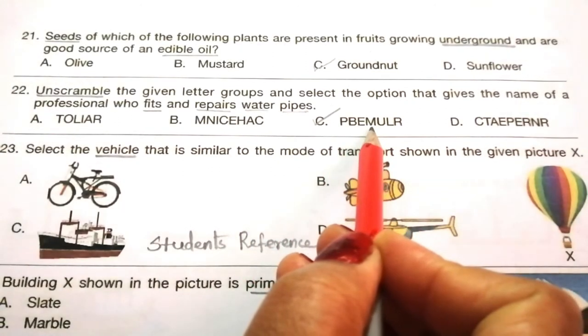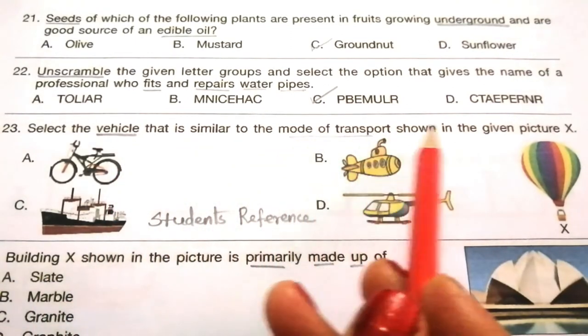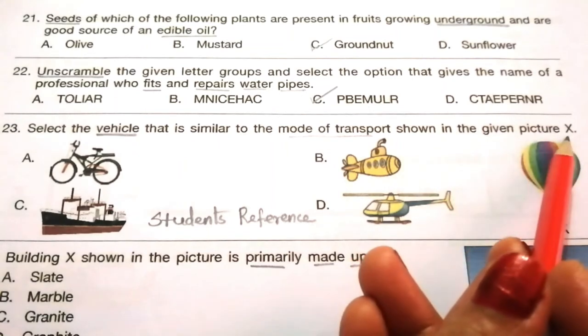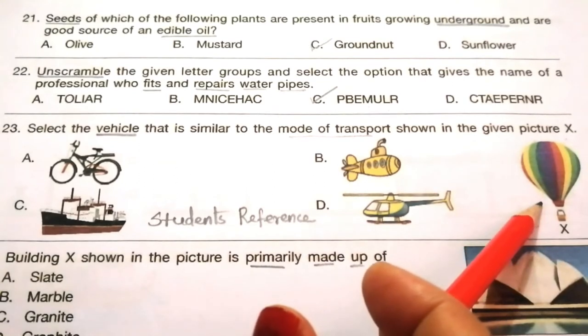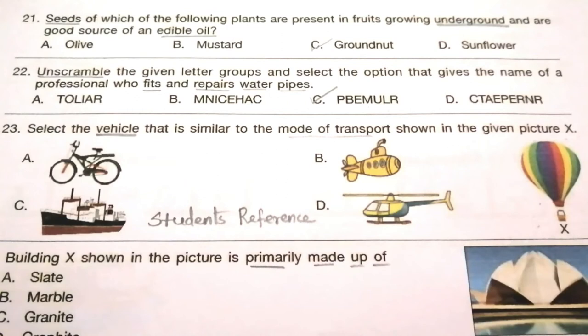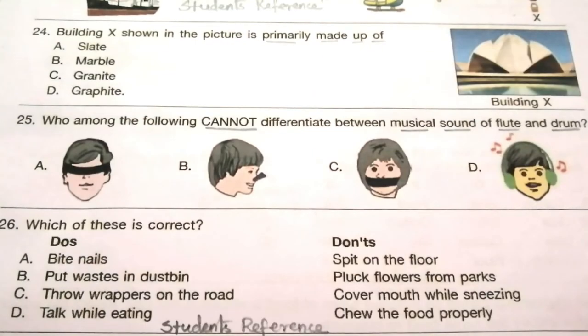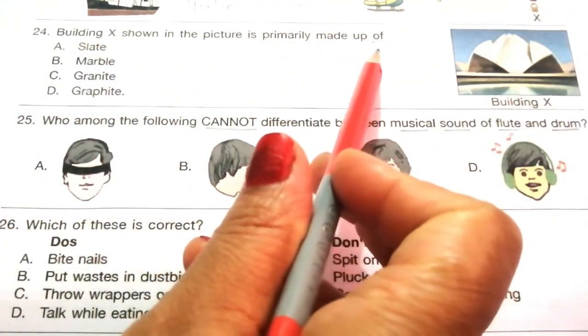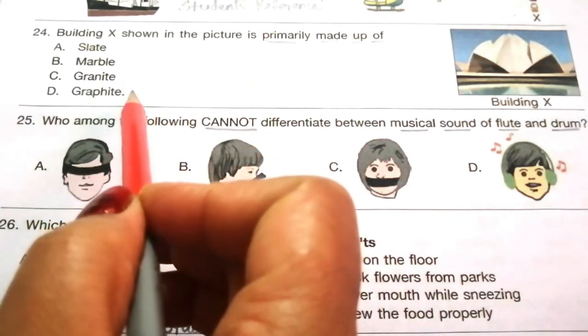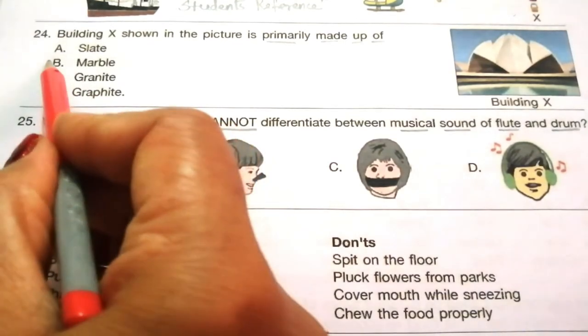Question 23: Select the vehicle similar to the mode of transport in picture X. This is a hot air balloon, an example of air transport. The answer is D, helicopter. Question 24: Building X shown in the picture is primarily made up of slate, marble, granite, or graphite. The answer is B, marble.